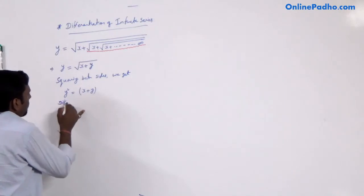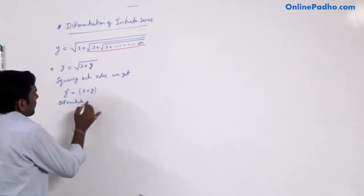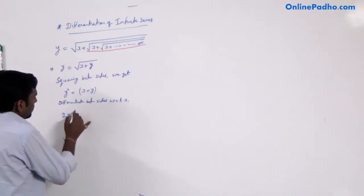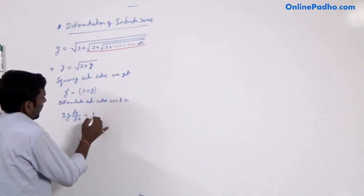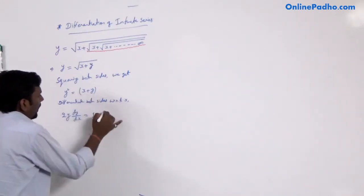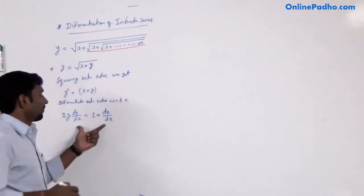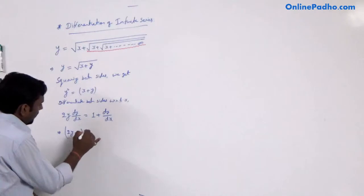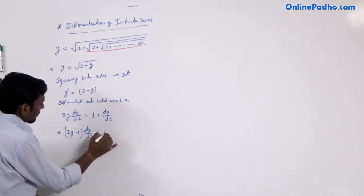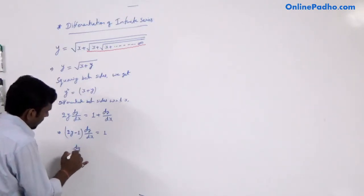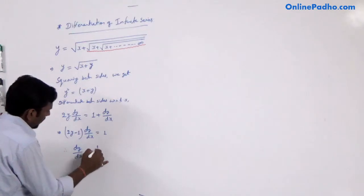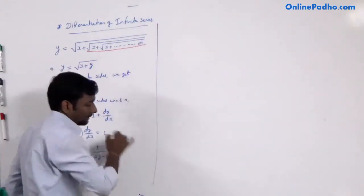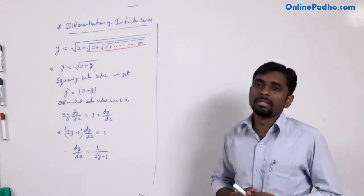If we differentiate both sides with respect to x, we get 2y · dy/dx equal to the derivative of x is 1, plus the derivative of y is dy/dx. We need to find dy/dx, so we simplify: 2y minus 1, multiplied by dy/dx, equals 1. Therefore, finally, dy/dx equals 1 divided by (2y − 1). This is the value of dy/dx.